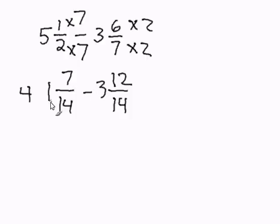Now I need to convert this 1 and 7 over 14 into an improper fraction. In order to do this, we take the denominator, multiply the whole number, and add it to the numerator. 14 times 1 is 14, plus 7 is 21. And our denominator remains the same.